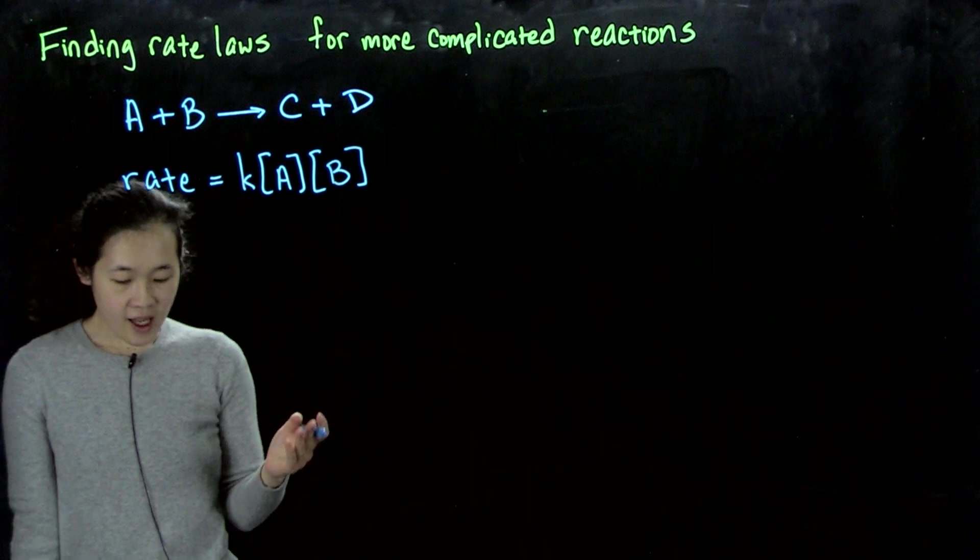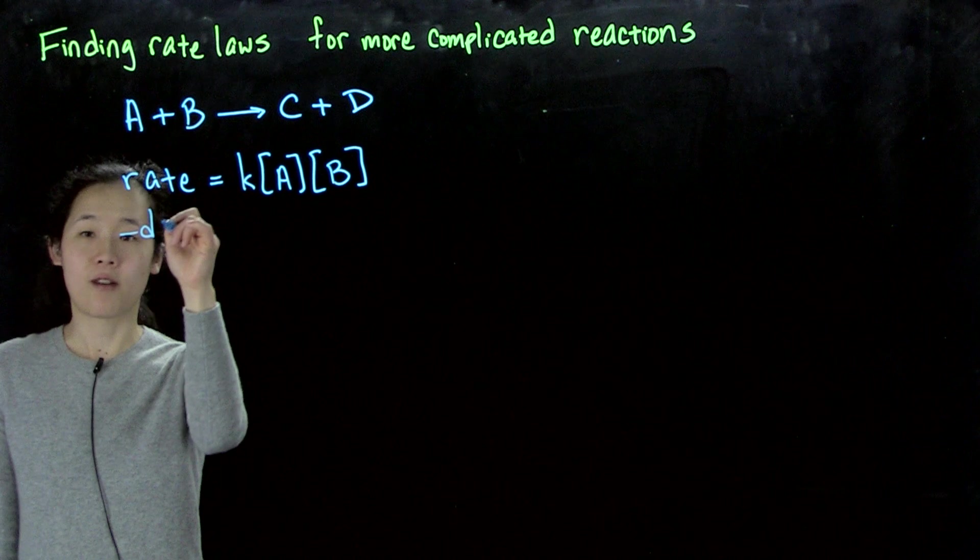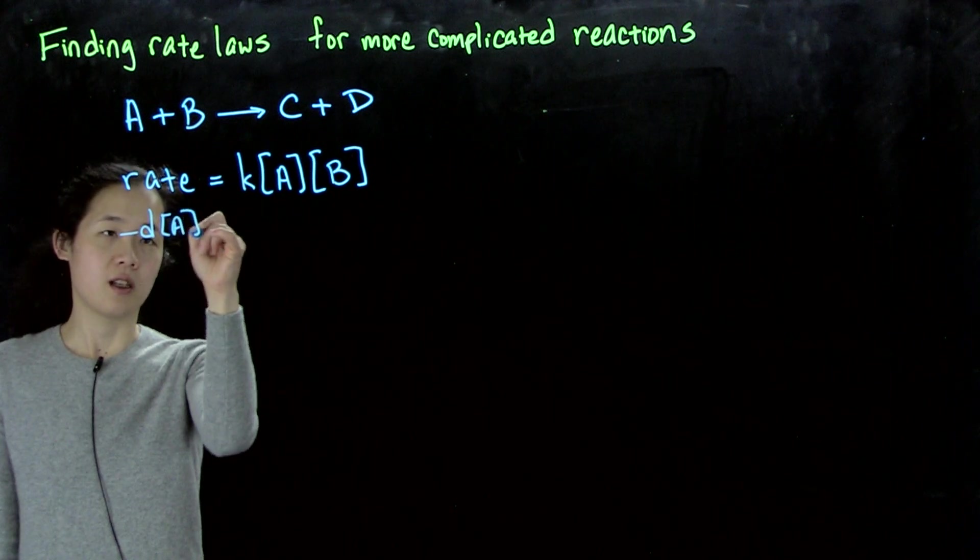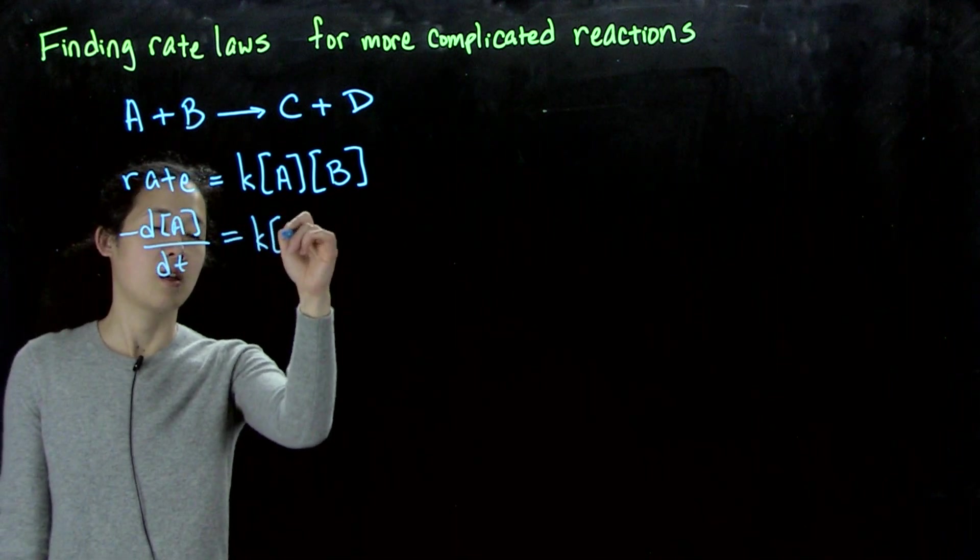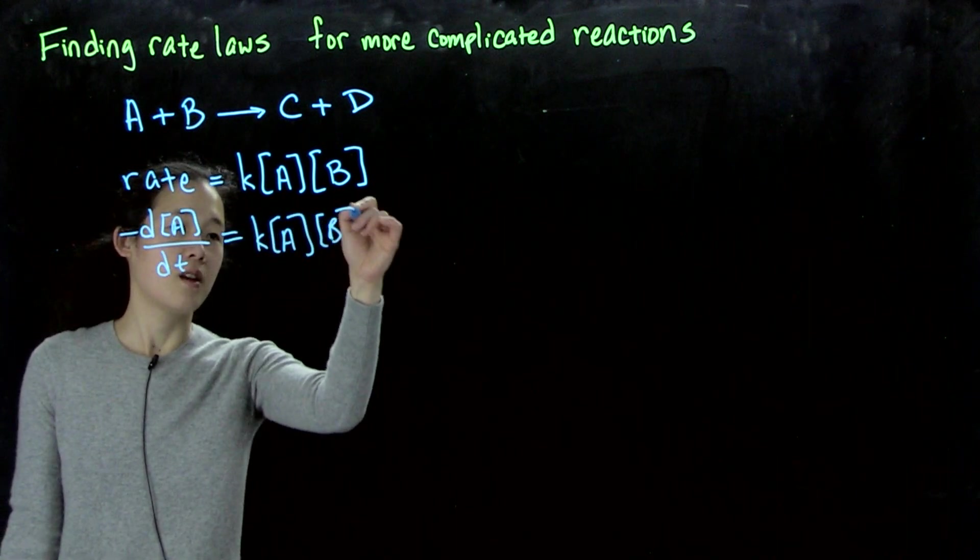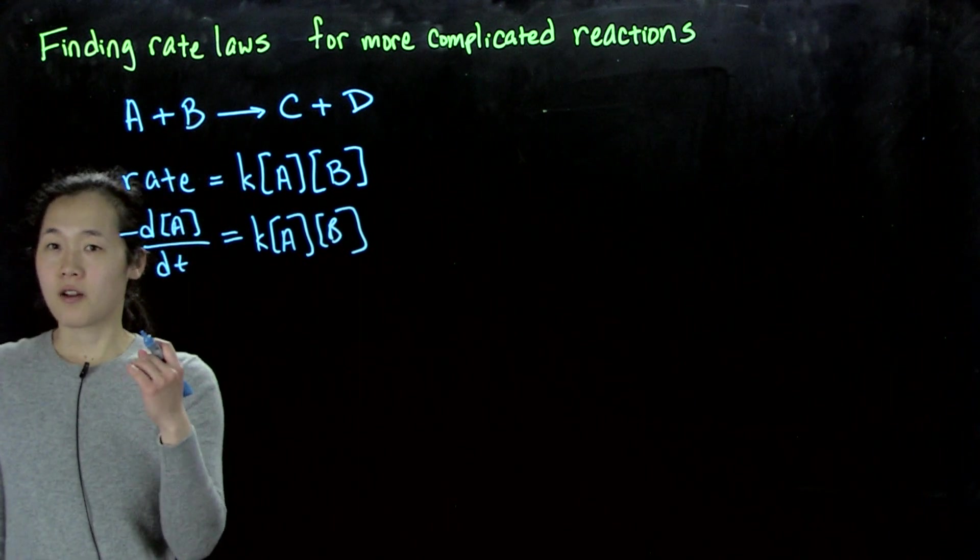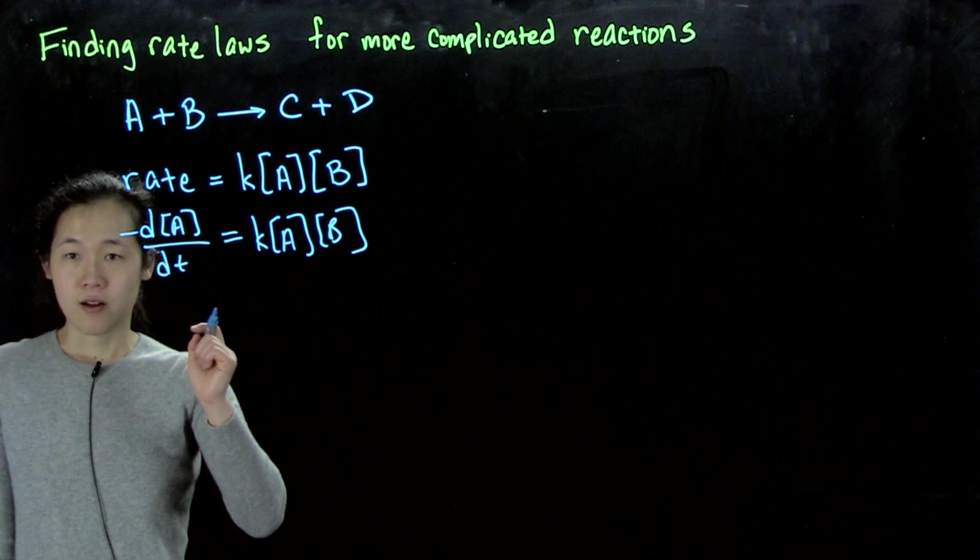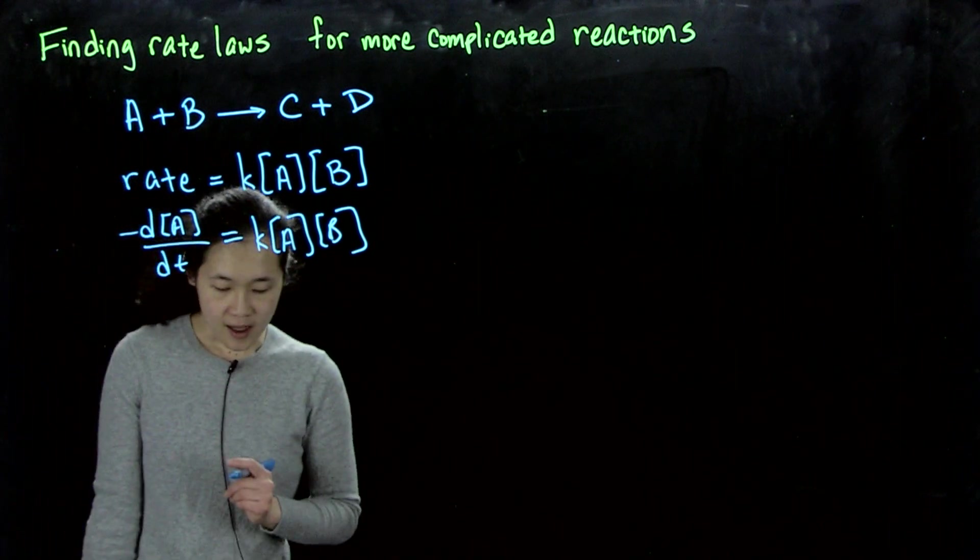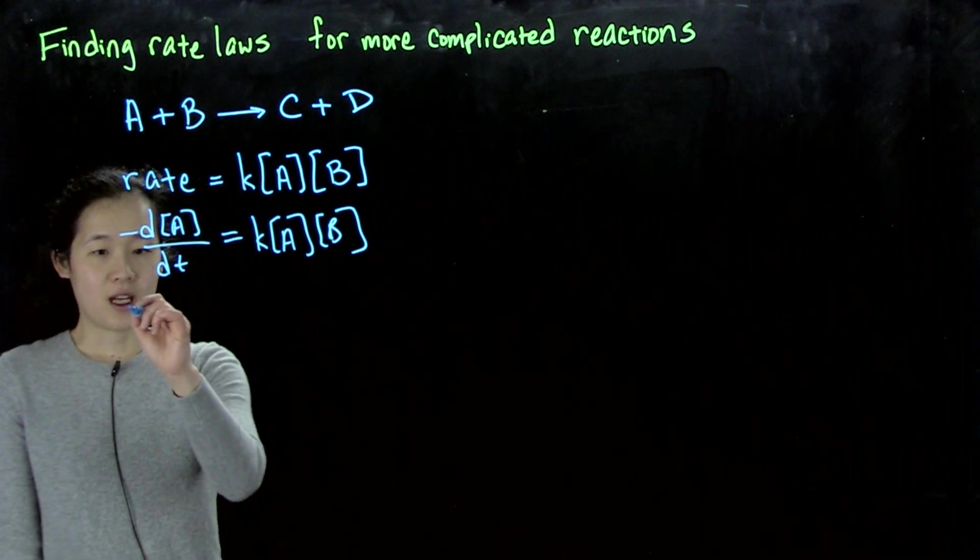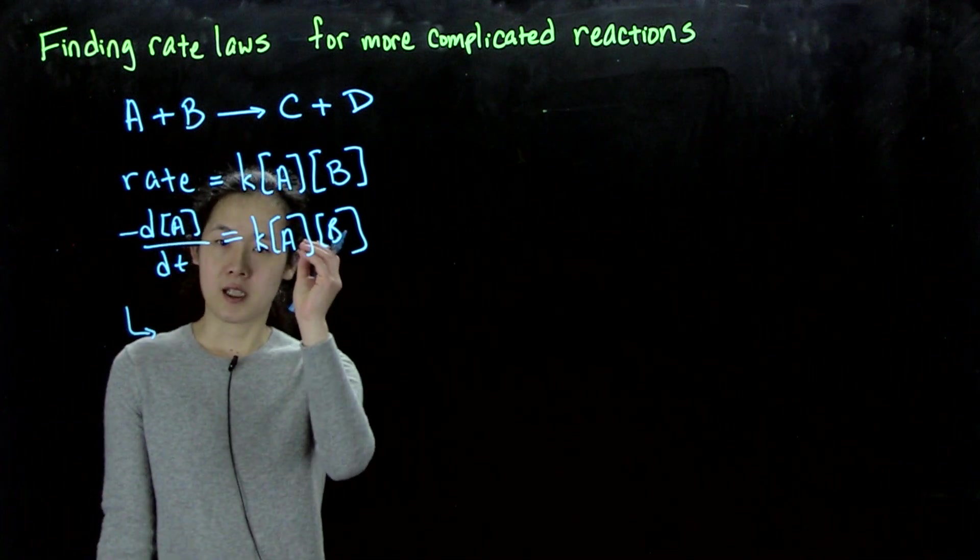So you can actually solve this. We could still set our rate equal to the differential rate law, so negative dA/dt. The consumption of A is going to be equal to k[A][B]. And then we would approach the problem in the same way, integrating from time t to time zero, and from the concentration of A at time t to A at time zero. So I won't go through all the math, but suffice it to say, the final answer has to involve both concentrations of A and B.